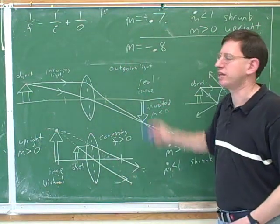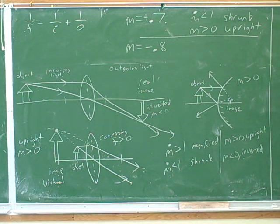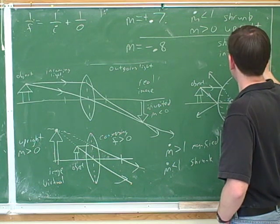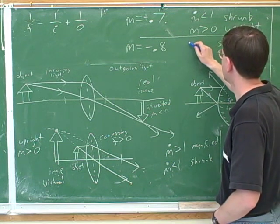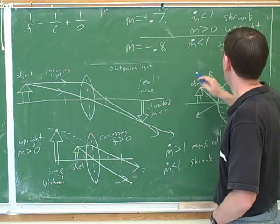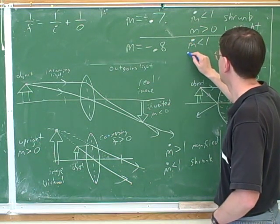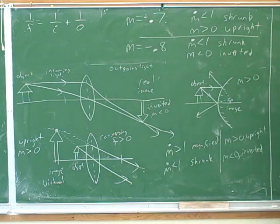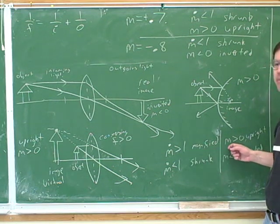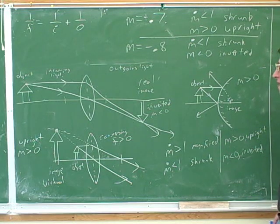What do we know about an image that has a magnification of negative 0.8? It's shrunken and inverted. The magnitude — the absolute value — is less than one, so it's shrunk. And m is less than zero, so the sign is negative, meaning inverted. Even after getting this, it's easy to get confused, so we have to think separately about the magnitude and the sign.